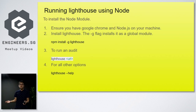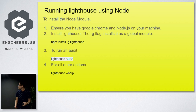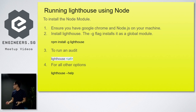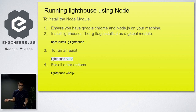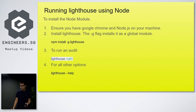How do we run Lighthouse using Node? First, we need to make sure we have Google Chrome and Node.js on our machine, then we install Lighthouse using the global flag: npm install -g lighthouse. After that, we run an audit by running lighthouse and the URL. If you want to know more about other features, we can type lighthouse --help and it will show all the features and functions we can run on the command line.